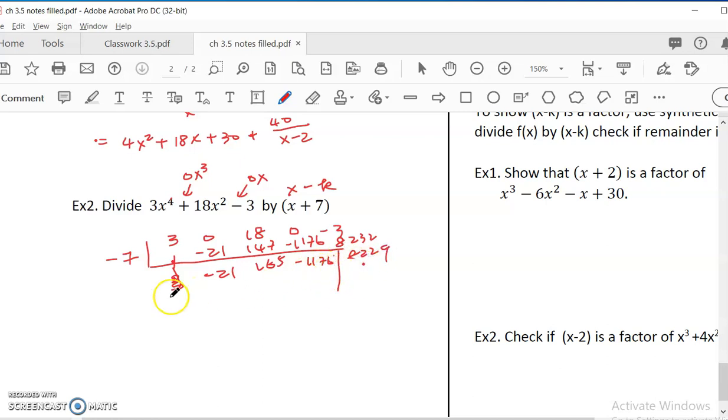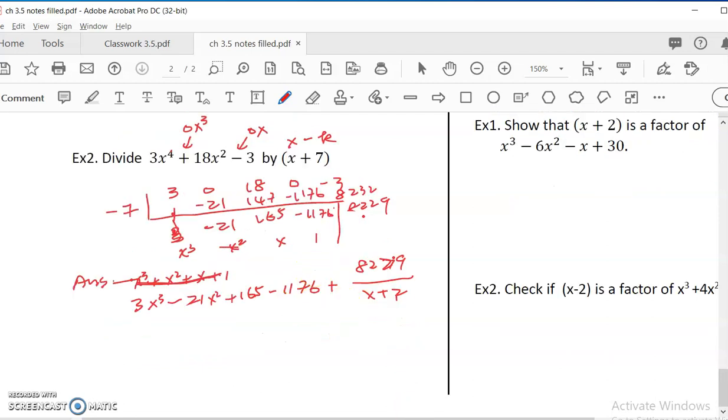So this one is the remainder, and all these are the quotient. So this is 1, x, x squared, and x cubed. So I should look at the coefficient. So it's 3x³ - 21x² + 165x - 1,176, and the remainder is 8,229 over the divisor x + 7. So that's how you do synthetic division without using long division.